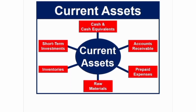The next type is current assets. Current assets are short-term assets — those which a company holds and can be converted into cash within one year. Examples of current assets include stock, raw materials, short-term investments, cash, prepaid expenses, and accounts receivables.